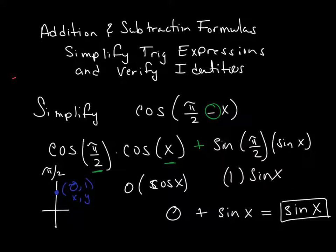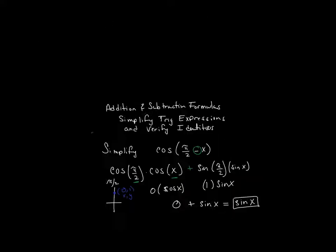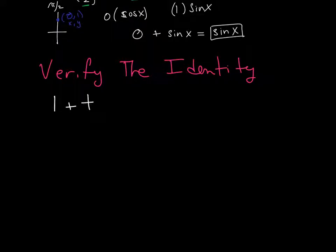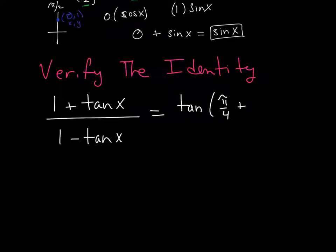All right, let's go ahead and try an identity now. So, the identity, we're going to verify it. All right, so my identity is going to be 1 plus the tangent of x all over 1 minus the tangent of x is equal to the tangent of pi over 4 plus x.